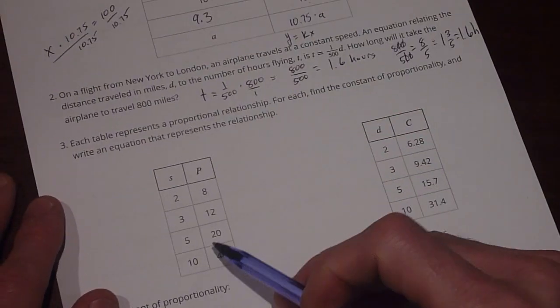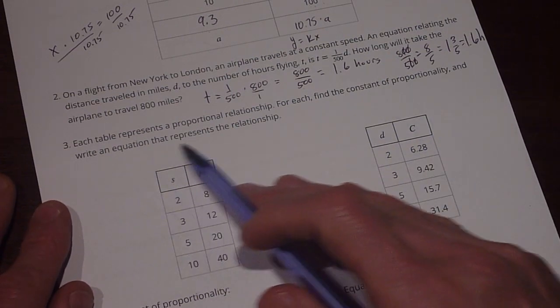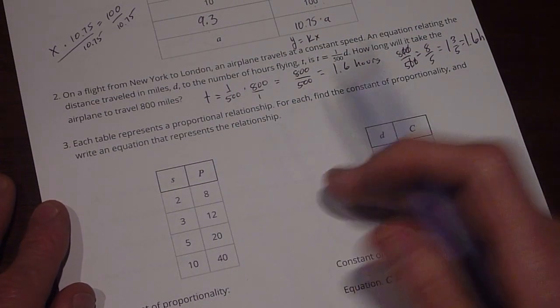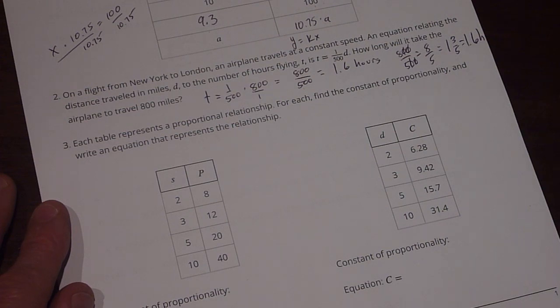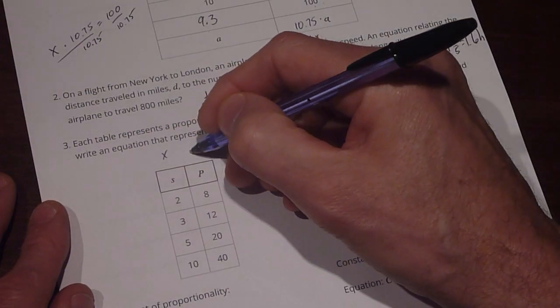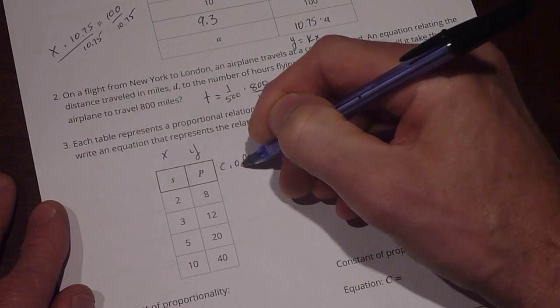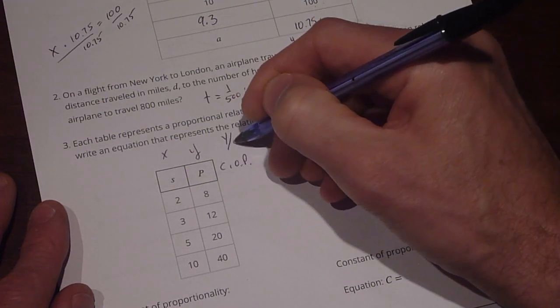Number three says, each table represents a proportional relationship. For each, find the constant of proportionality and write an equation that represents the relationship. So the constant of proportionality is going to equal, if we think of this as x and this is y, then the constant of proportionality is over here, and that's going to be y divided by x.